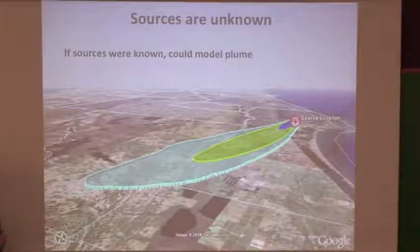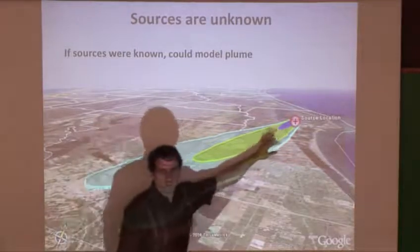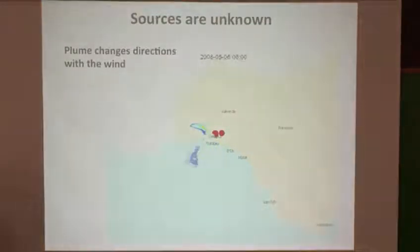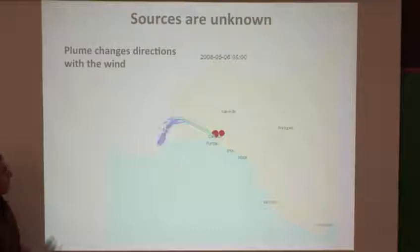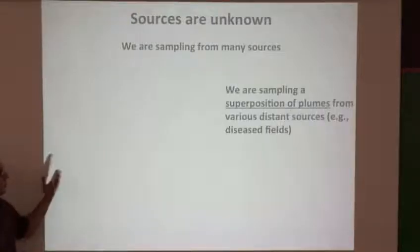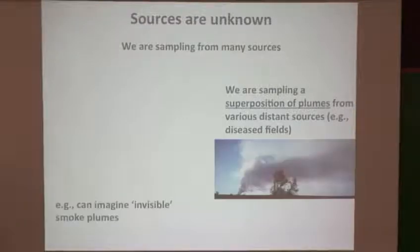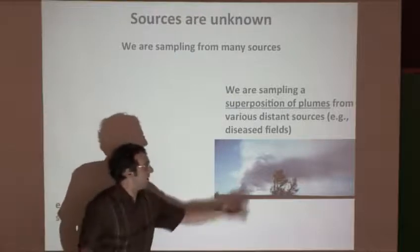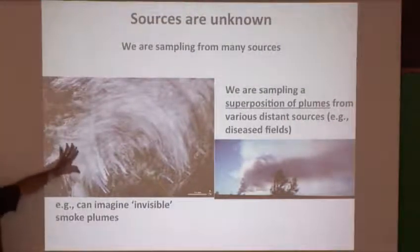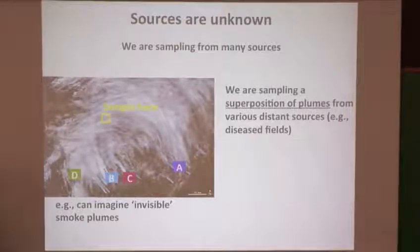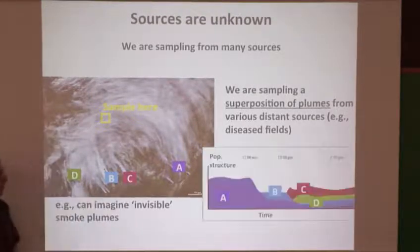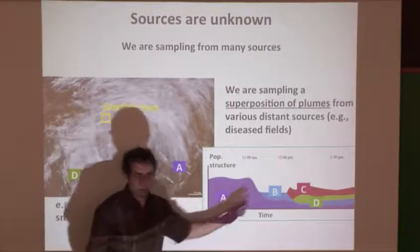We're sampling from unknown sources. If there were a disease field, there'd be some downwind plume, but we don't know the source locations of disease. As winds change, the plume changes direction and there are many sources. I think of it as sampling a superposition of plumes from many distant sources — like invisible smoke plumes. Instead of actual smoke, we have plumes of microbes, and as a function of time we have an evolving population structure as the winds change.